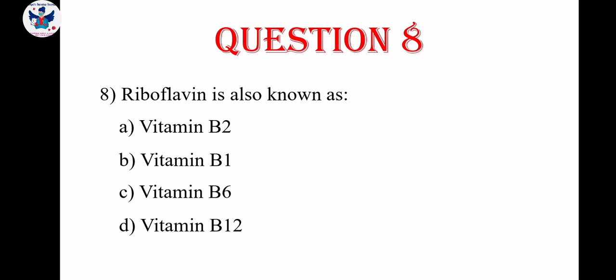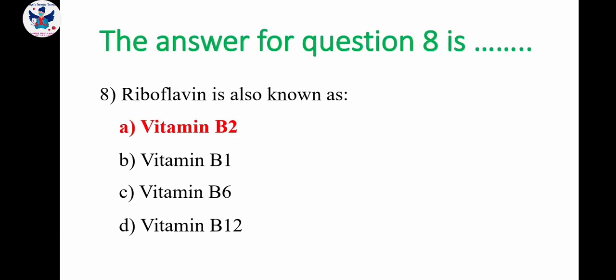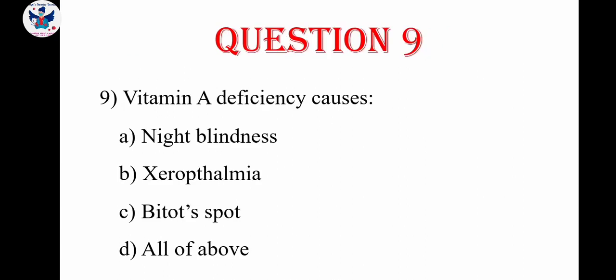Question number 8: riboflavin is also known as. The correct answer is vitamin B2. Question number 9: vitamin A deficiency causes — A. Night blindness, B. Xerophthalmia, C. Bitot's spot, D. All the above. Vitamin A deficiency leads to night blindness, xerophthalmia, and Bitot's spot. So the correct answer is all the above.